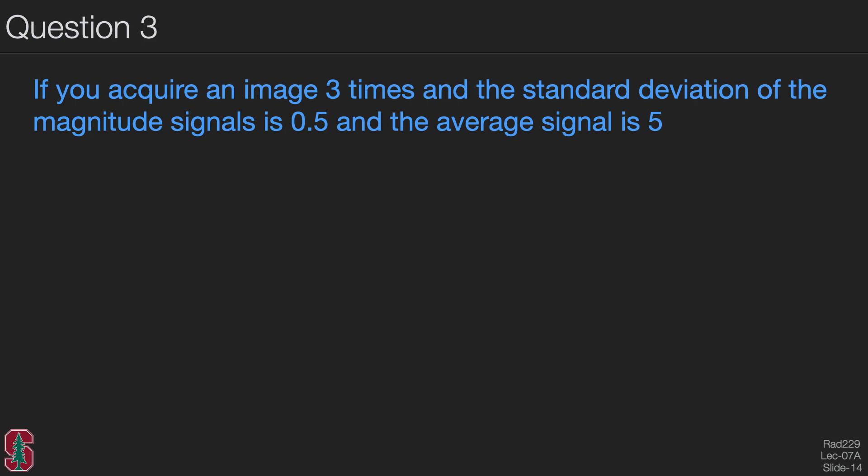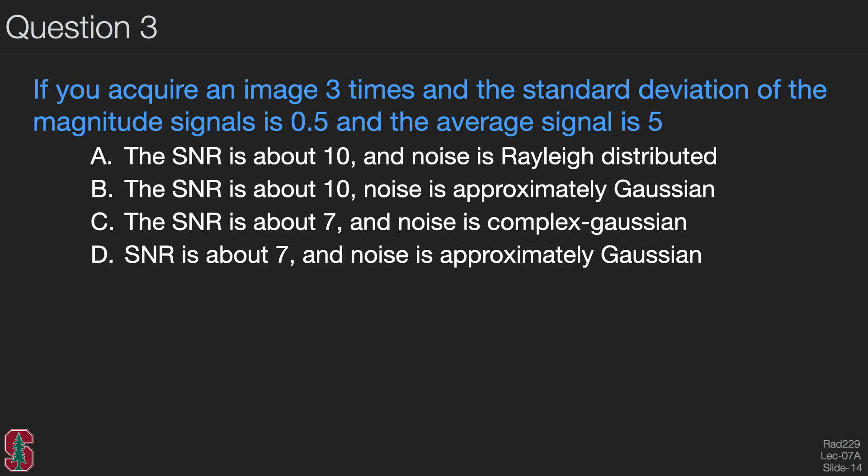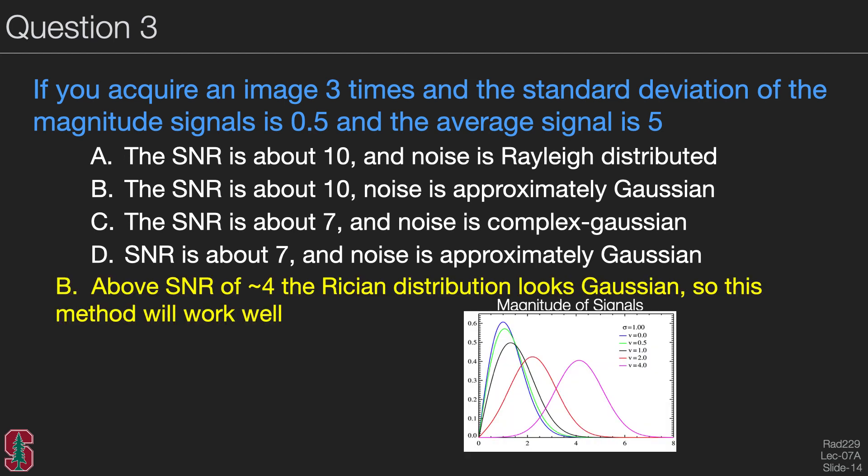This brings us to another question. If you acquire an image three times and the standard deviation of the magnitude signals is 0.5 and the average signal is five, which answer is correct? The correct answer is B. Above an SNR of about four, the Rician distribution looks Gaussian, so this method will work really well. We take the signal of five and the standard deviation is 0.5. By measuring the standard deviation of these signals, we've simply measured the Gaussian sigma parameter. Recall the plot where the curve on the far right looks very Gaussian.